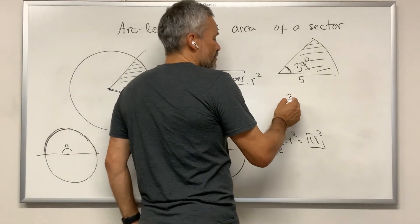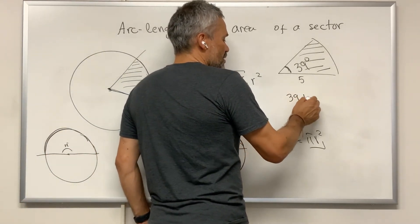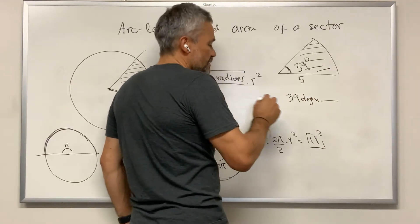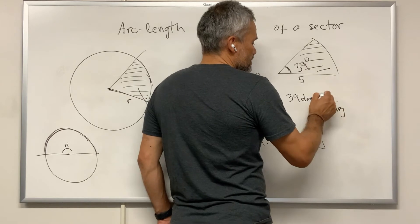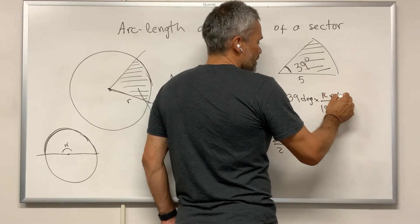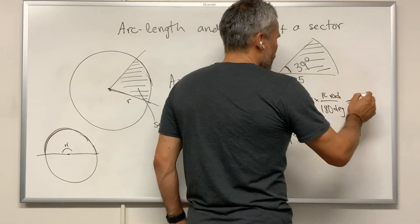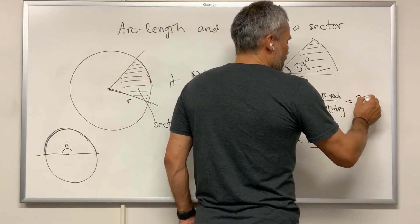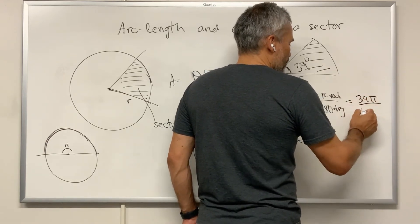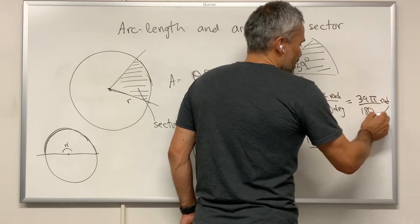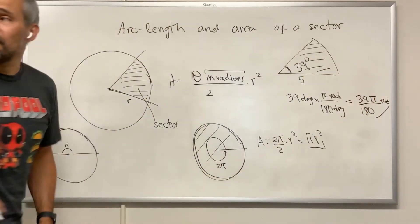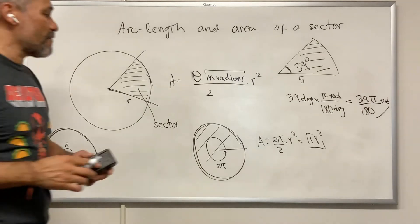Then we have 39 degrees. Let's change it to radians. 180 degrees is the same as π radians. And then this is an angle of 39π over 180 radians. And with that information, now we can find the area.